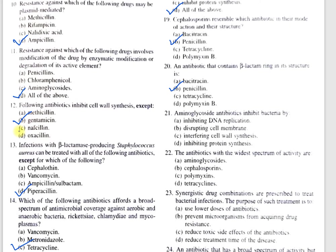Question number 21: Aminoglycoside antibiotics inhibit bacteria by — A, inhibiting DNA replication; B, disrupting cell membrane; C, interfering with cell wall synthesis; D, inhibiting protein synthesis. The correct option is D, inhibiting protein synthesis. Question number 22: The antibiotics with the widest spectrum of activity are — A, aminoglycosides; B, cephalosporins; C, polymyxins; D, tetracyclines. The correct option is D, tetracyclines.